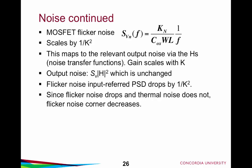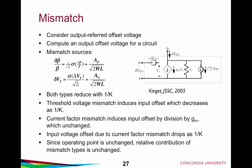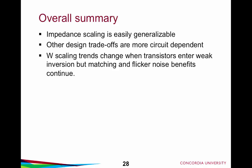Looking at mismatch under area (width and length) scaling: both mismatch sources reduce by 1/K (increasing both width and length). The threshold voltage mismatch induces an input offset that also drops with 1/K. The current factor mismatch induces an input offset through division by GM, which is unchanged — so the input voltage offset due to current factor also drops with 1/K. We expect both contribution types to be affected in the same way because we're not changing the operating point of the transistor.